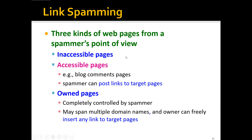First, we have inaccessible pages which the spammers cannot touch — for example, some government home pages. Second, we have accessible pages, such as blog comment pages, where spammers can post links and point them to the target pages. Third, we have pages owned by the spammer — pages completely controlled by the spammer, who can also own multiple domain names and freely insert any links to the target pages.